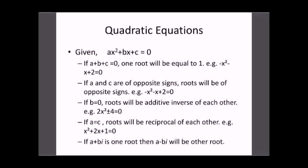From here, entry test MCQs can be asked. By looking at the discriminant you can tell a lot about the roots. There are also some tricks where just by looking at the quadratic equation you can identify the roots. These are useful for MCQ questions with 4 options. For example, if A plus B plus C equals zero, one root will always equal 1.